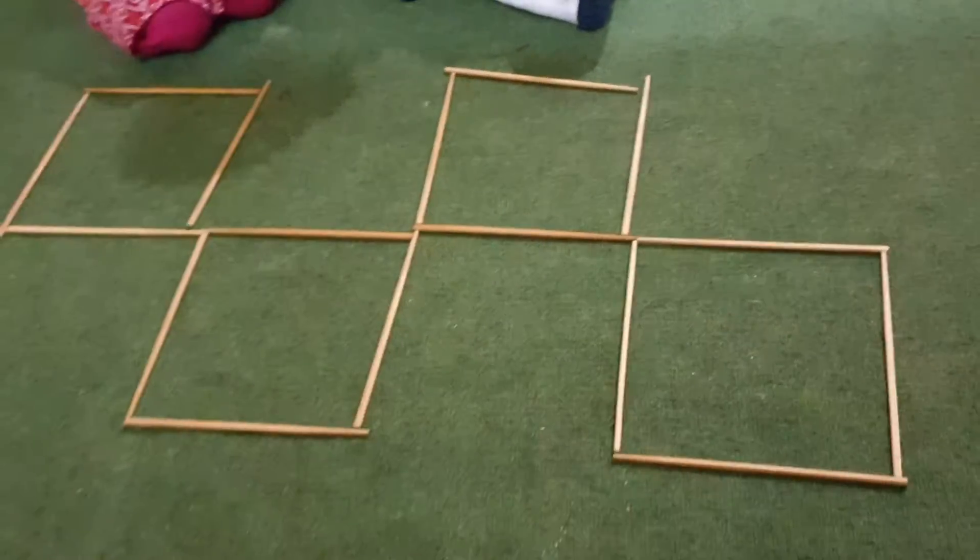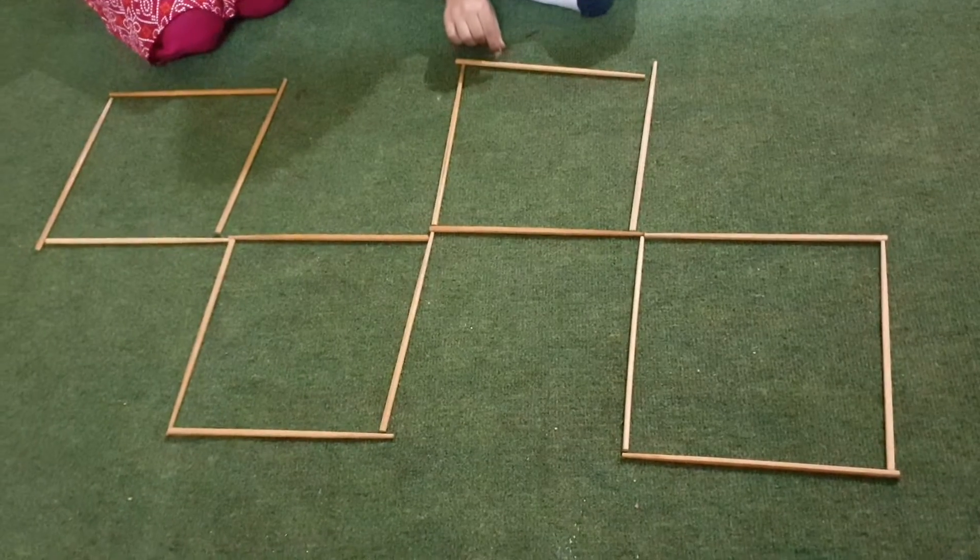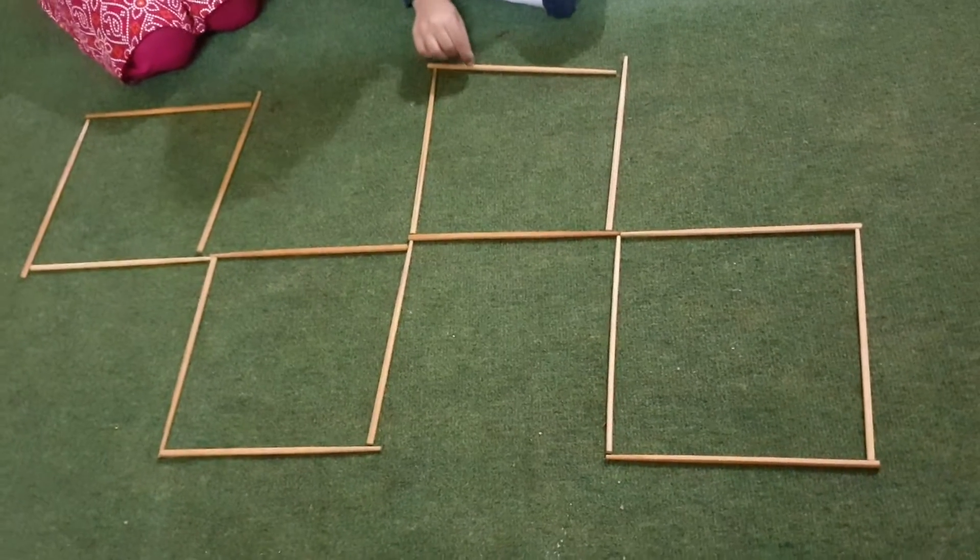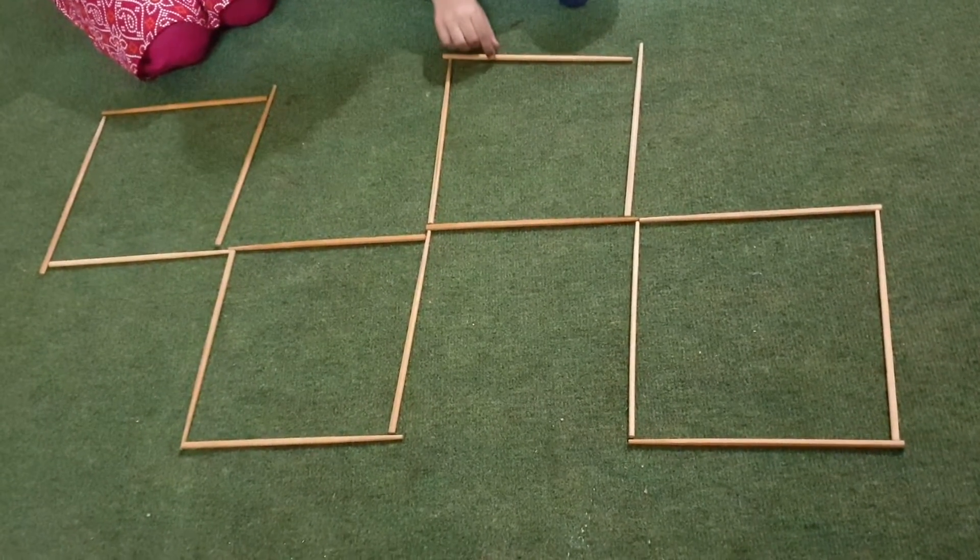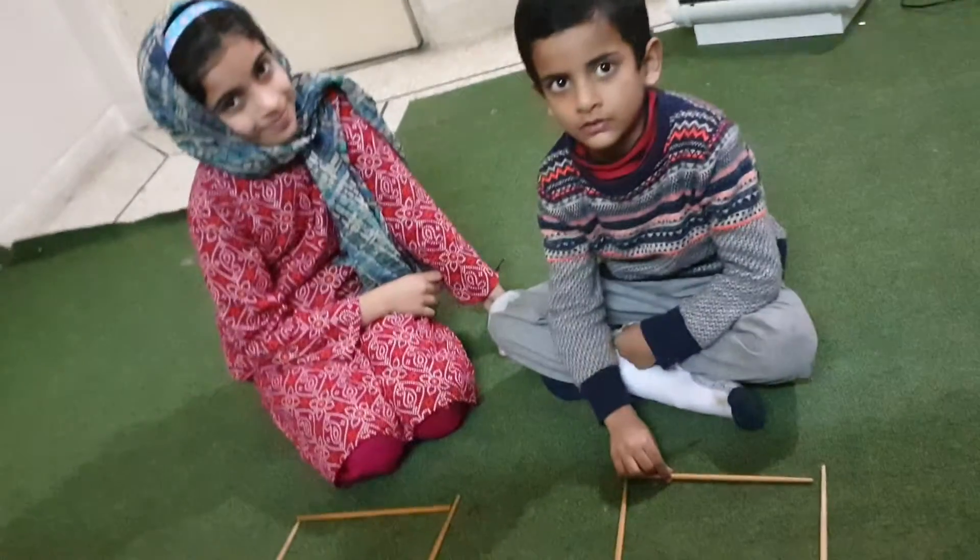So, you only get three seconds. You can move two sticks at a time to make a fifth square box, but if you are unable to complete the fifth square box, you should go back to the original position. Okay?